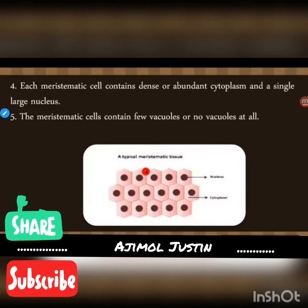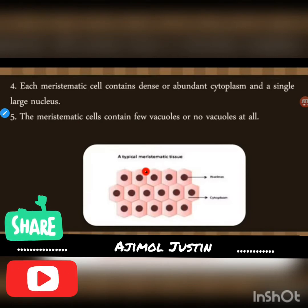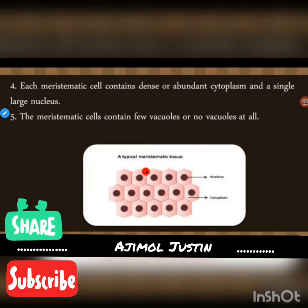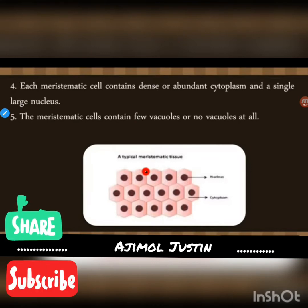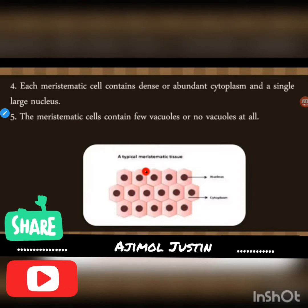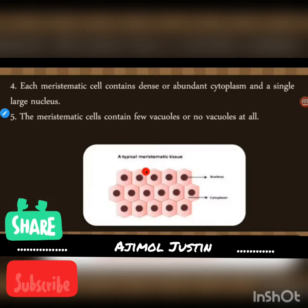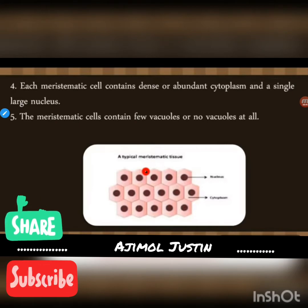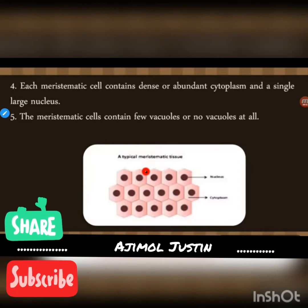Each meristematic cell contains dense or abundant cytoplasm and a single large nucleus. In meristematic cells there is a central nucleus surrounded by dense cytoplasm. Meristematic cells contain few vacuoles or no vacuoles at all. Sometimes vacuoles are found; sometimes there will not be any vacuoles at all.